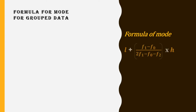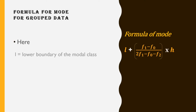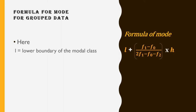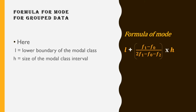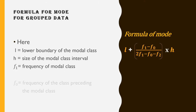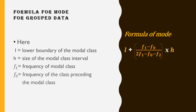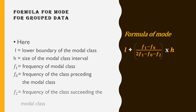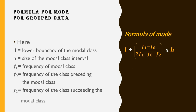Here, L is the lower boundary of the modal class, H is the size of the modal class interval, F1 is the frequency of the modal class, F0 is the frequency of the class preceding the modal class, and F2 is the frequency of the class succeeding the modal class.